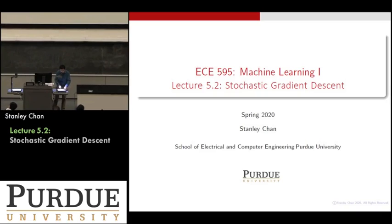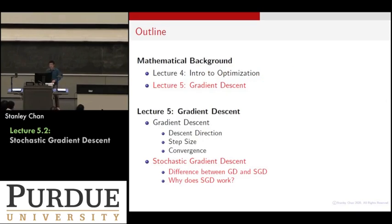Let's move on to talk about another very useful thing. It's called stochastic gradient descent. This is the most widely used algorithm nowadays in machine learning.